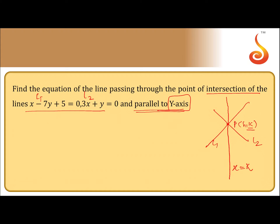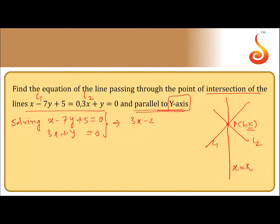Let us solve the equations. Solving x minus 7y plus 5 equals 0 and 3x plus y equals 0: multiplying the first equation by 3 gives 3x minus 21y plus 15 equals 0. Subtracting the second equation from this gives minus 22y plus 15 equals 0.